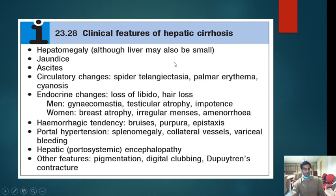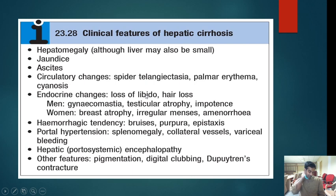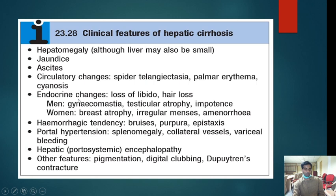Clinical features of hepatic cirrhosis: early stage shows hepatomegaly; late stage shows reduced liver size. Patients have jaundice and ascites. Circulatory changes include spider telangiectasias and palmar erythema. Endocrine changes include loss of libido, hair loss, gynecomastia in men, and testicular atrophy; in women, breast atrophy, irregular menses, and amenorrhea — all due to hyperestrogen from testosterone-to-estrogen conversion. Hemorrhagic tendencies due to thrombocytopenia causing bruising and epistaxis. Portal hypertension with splenomegaly, collateral vessel formation, and variceal bleeding.